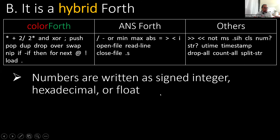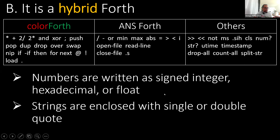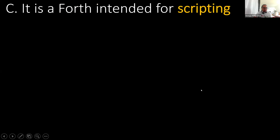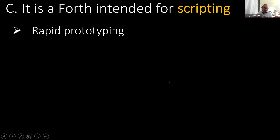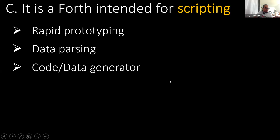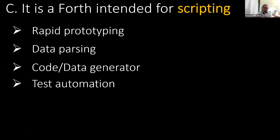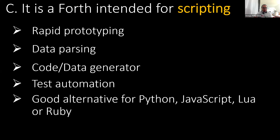Numbers are written as signed integer, hexadecimal, or float, and strings are enclosed with single or double quotations. ColorScript is intended for scripting — hence the name. By scripting I mean we can use this for rapid prototyping, data parsing, data generation, and in the future maybe test automation. In general, ColorScript can be an alternative for Python, JavaScript, Lua, or Ruby.